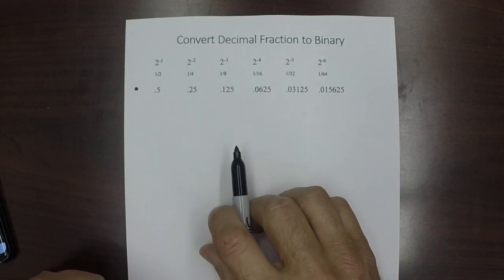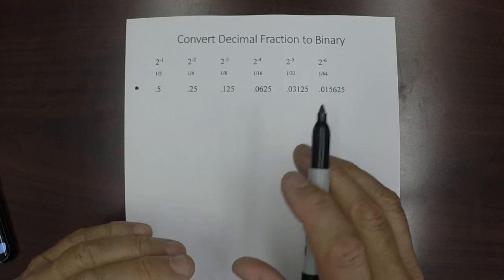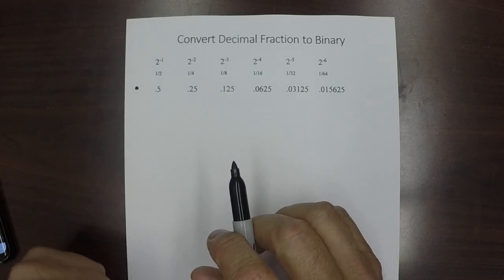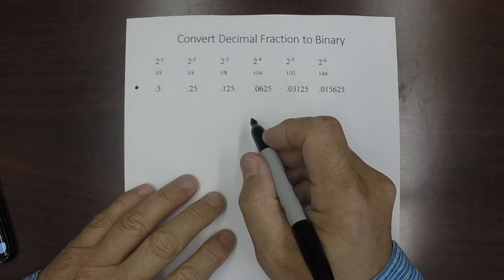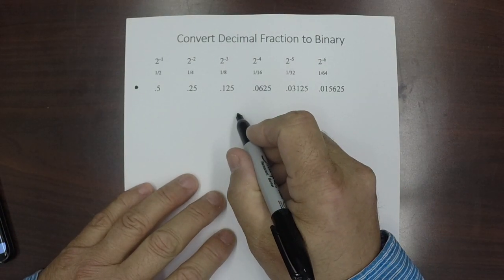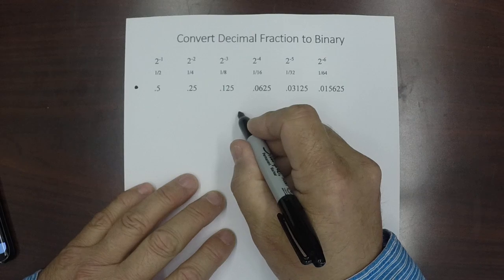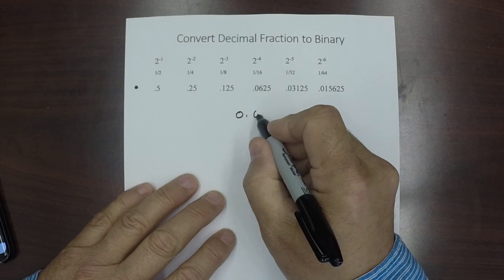And to convert a number, what we do is we multiply instead of divide. Recall that in the whole number, we divide the number by 2 and get the remainder. Well here what we're going to do is we're going to multiply. So let's start off and I'll give you an example, and it's not a trivial example. It's a pretty good little example.